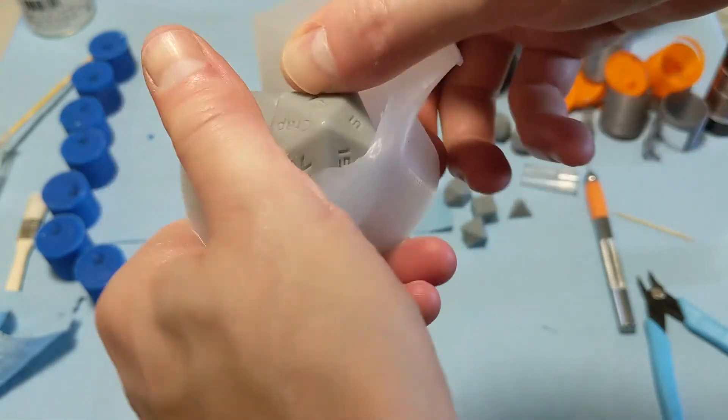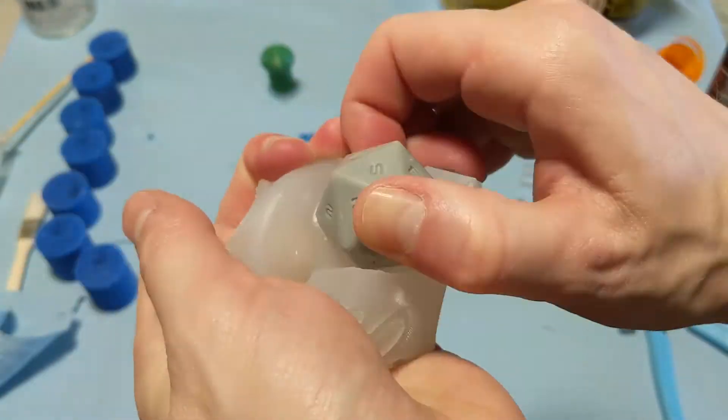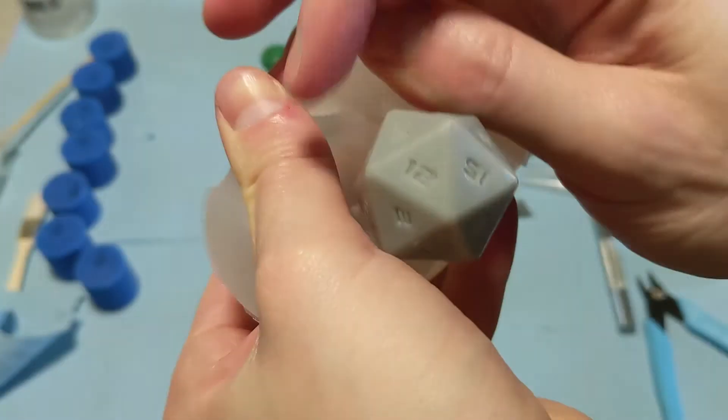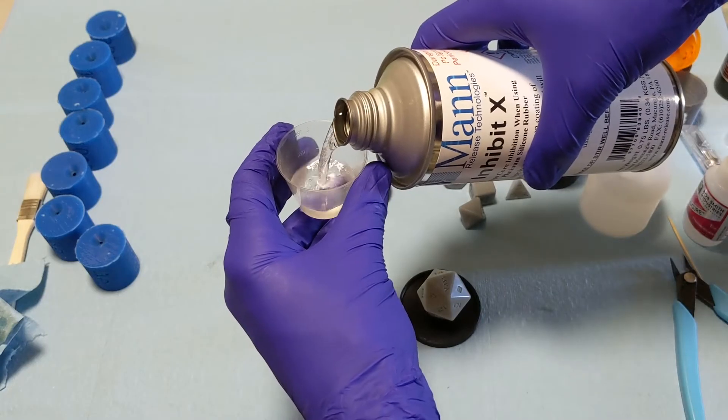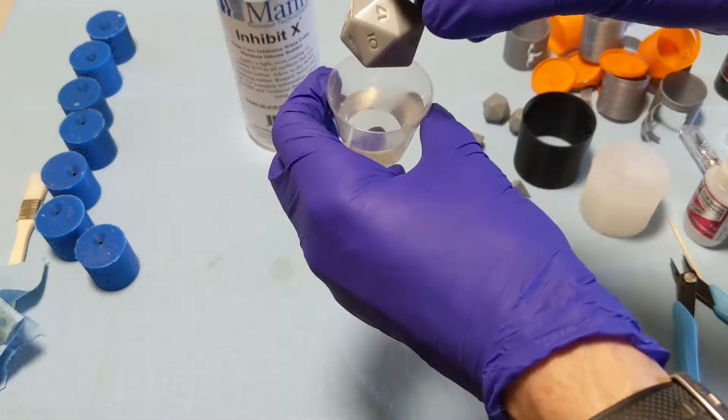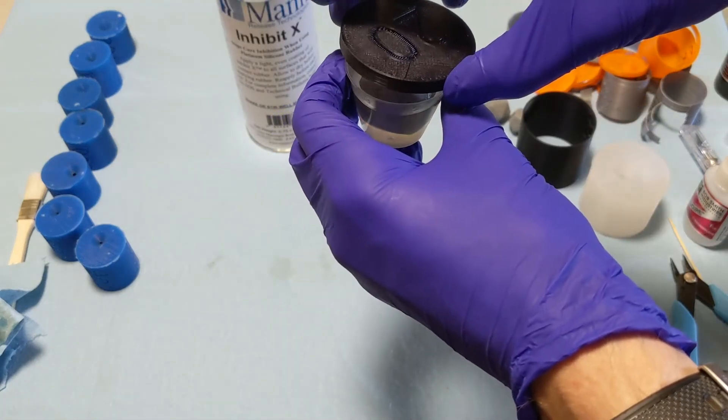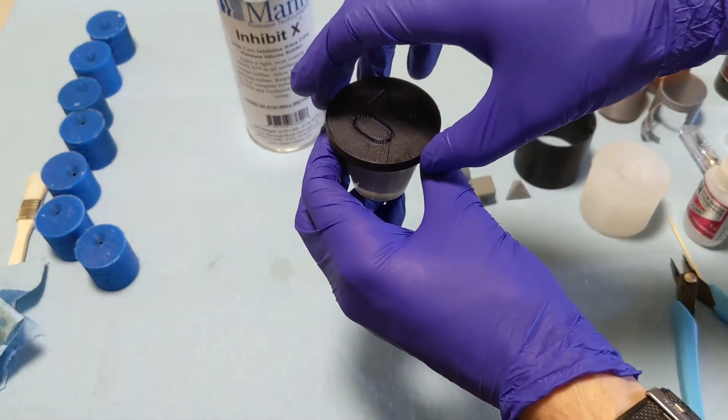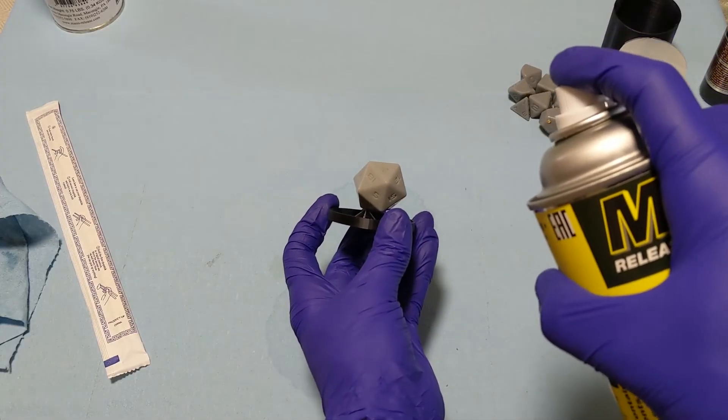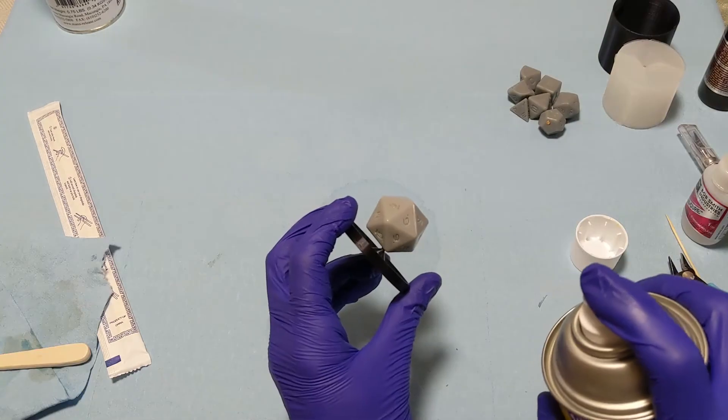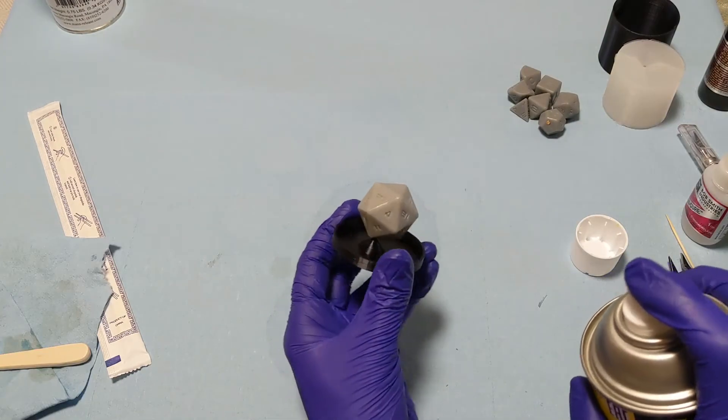I do finally eventually get it to come out, but it does have pieces of silicone stuck in the numbers that I later have to remove with a toothpick, and then I have to clean it up again and do it all over again. But this time, I'm going to use two coats of ease release just for good measure. It seems like if you have to use two coats of Inhibit X, you should probably use two coats of ease release just to make sure that you have a good coat of each.